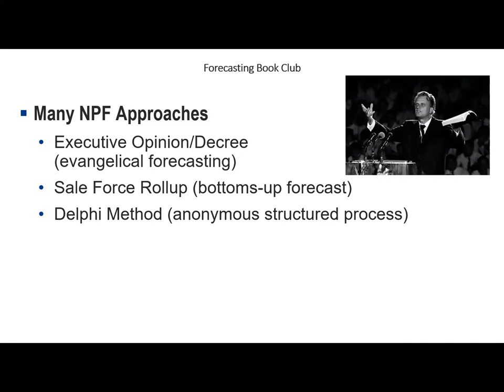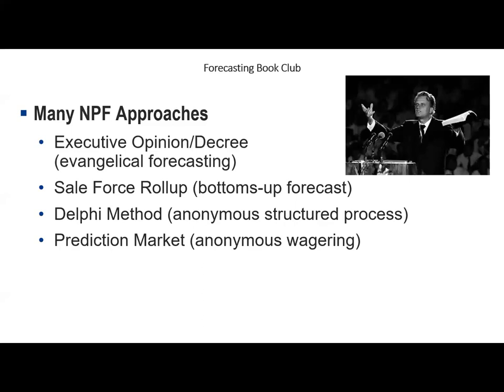The Delphi method has the advantage of anonymity, so participants may be more honest than in front of peers and managers. However, compared to a well-run meeting, there's less dynamic information sharing, and anonymous participants may not try as hard to create quality forecasts. Prediction markets are a more recent innovation gaining limited traction in business forecasting. Participants trade shares in a stock market-like environment where price indicates forecast size, providing real-time reaction to new information with financial incentives — but without shared reasoning, and with potential for wild price swings.